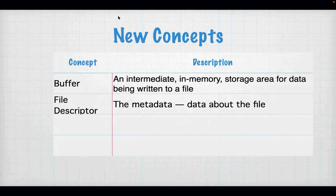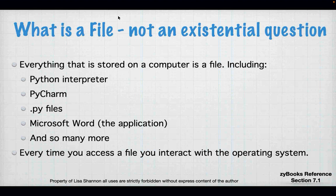The file descriptor is metadata — data about the file. Everything is a file: what we're watching here is a file, and it is run by a program that is itself a file. Every time you access a file, you interact with the operating system. There are layers in computing: you've got hardware, you've got the operating system which is the closest software to the hardware.